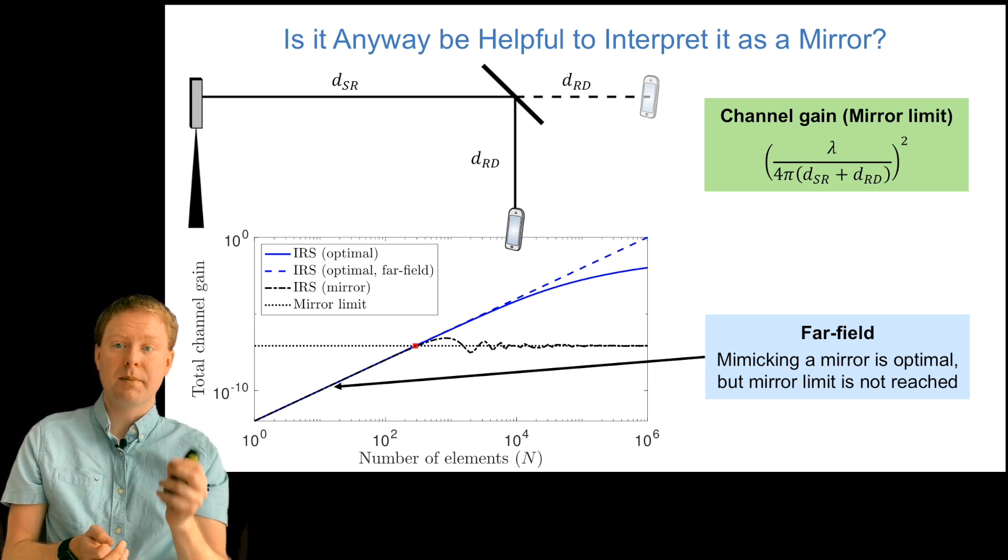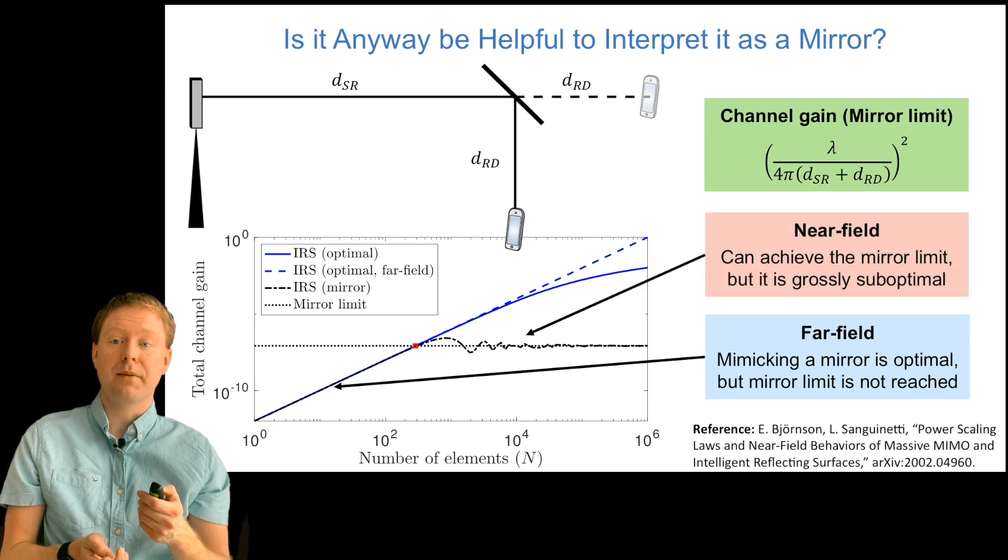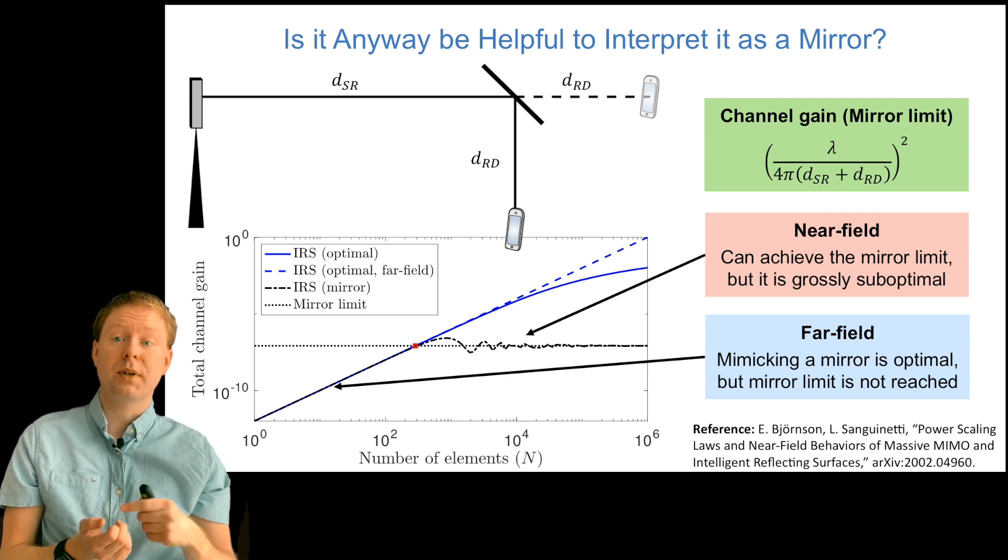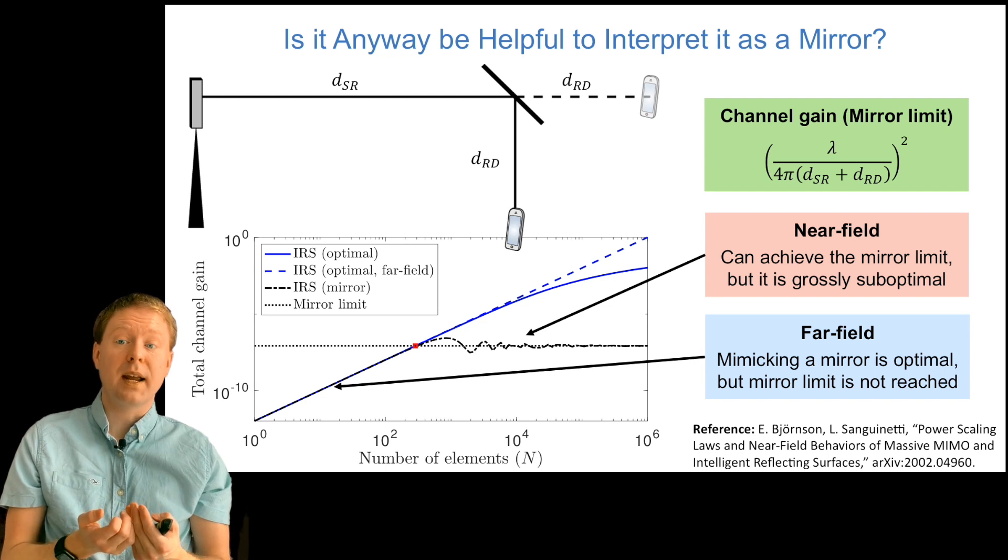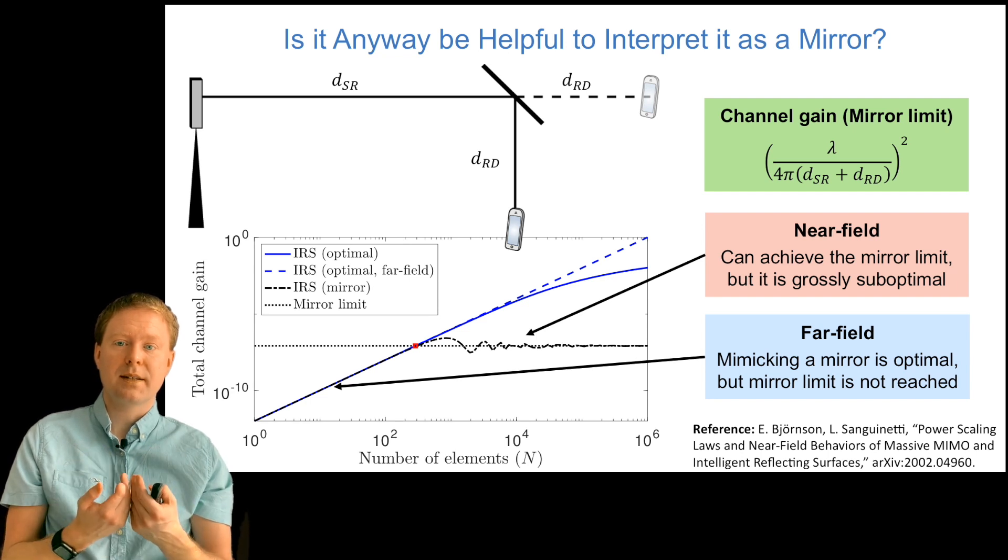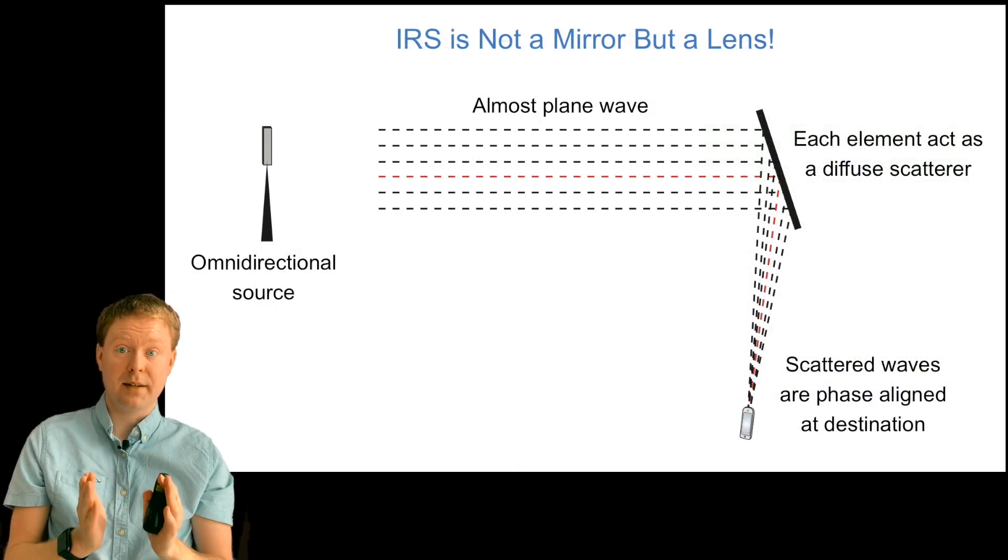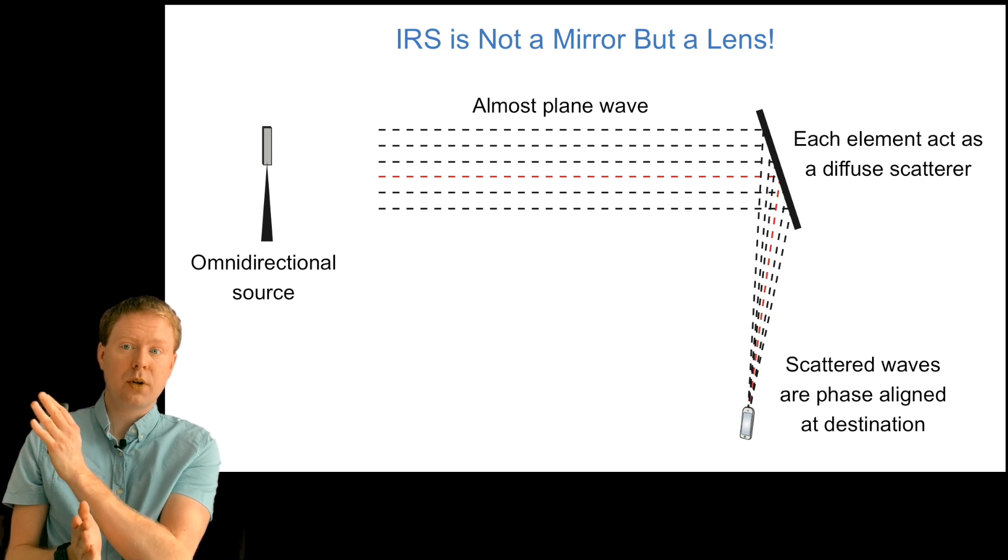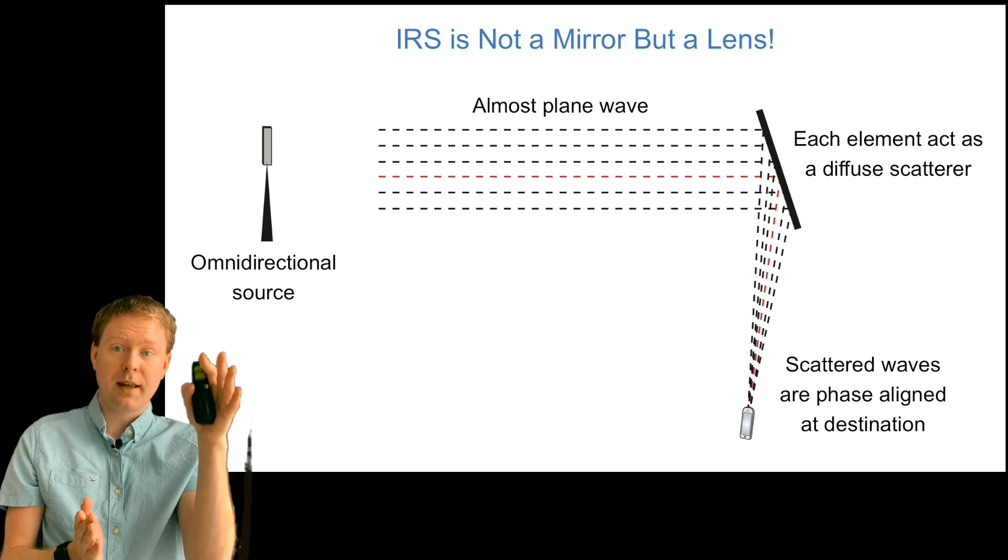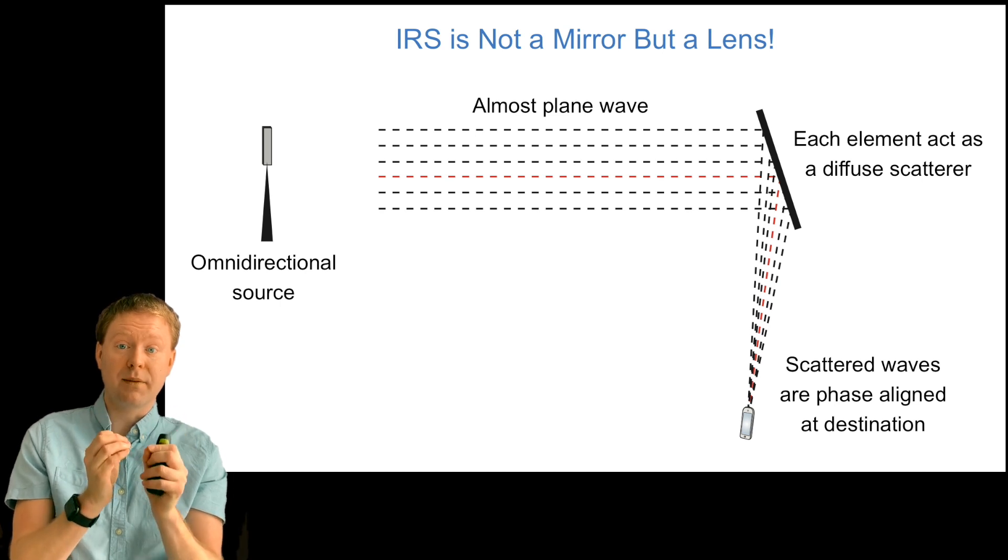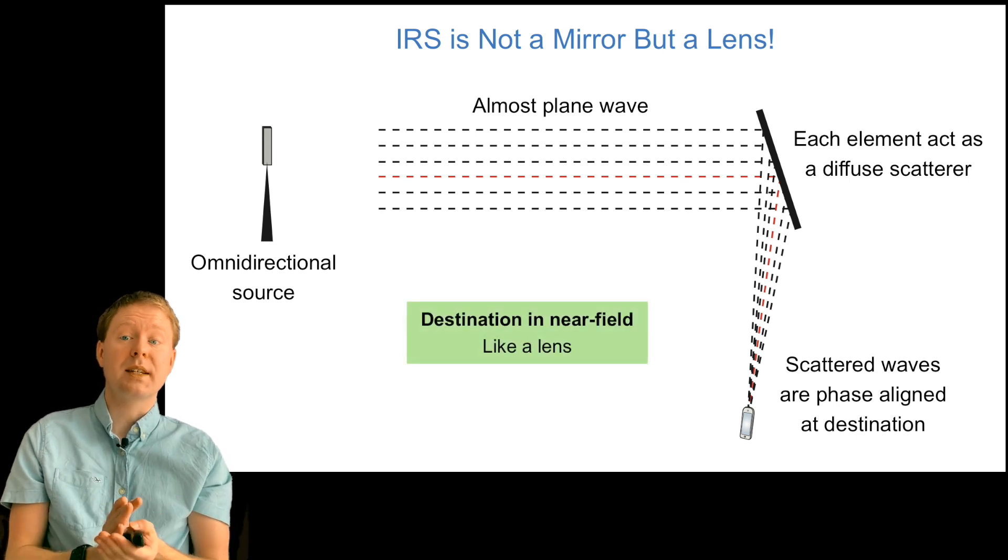Eventually we reach this mirror limit and then we move into the near field. In those cases, it's grossly suboptimal to operate it as a mirror. This is logarithmic scale, so we can have a thousand times better channel gain when we have a hundred times hundred element array here. In those cases, what should we interpret an IRS as? Well, an IRS is not a mirror, it is a lens. If you have an omnidirectional source or transmit the signal towards the IRS, and then you optimize its operation, the signal will be focused at the point of the receiver. All the scattered waves have phase alignment at this point. It is like a lens, and that is what we will see in the near field. It's the same thing as a satellite receiver that takes a signal and focuses on one point.